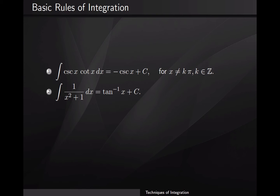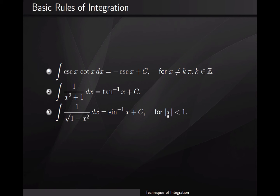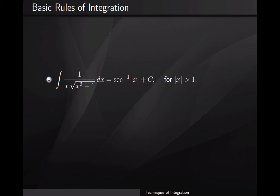For the inverse trigonometric functions: the integral of one over x squared plus one dx is the inverse tangent of x plus c, with no restrictions. The integral of one over the square root of one minus x squared dx is the inverse sine of x plus c, with the condition that the absolute value of x is less than one — so that the expression under the square root is a real number. The integral of one over x times the square root of x squared minus one dx is the inverse secant of the absolute value of x plus c, restricted so that x squared minus one is greater than zero. And the integral of e to the x dx is simply e to the x plus c.